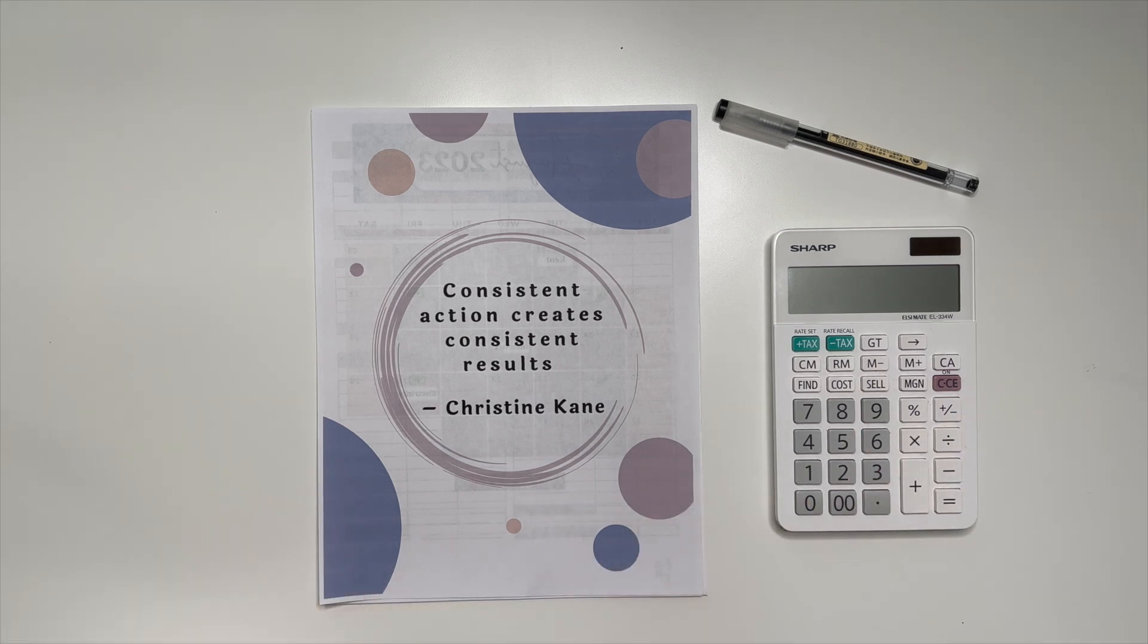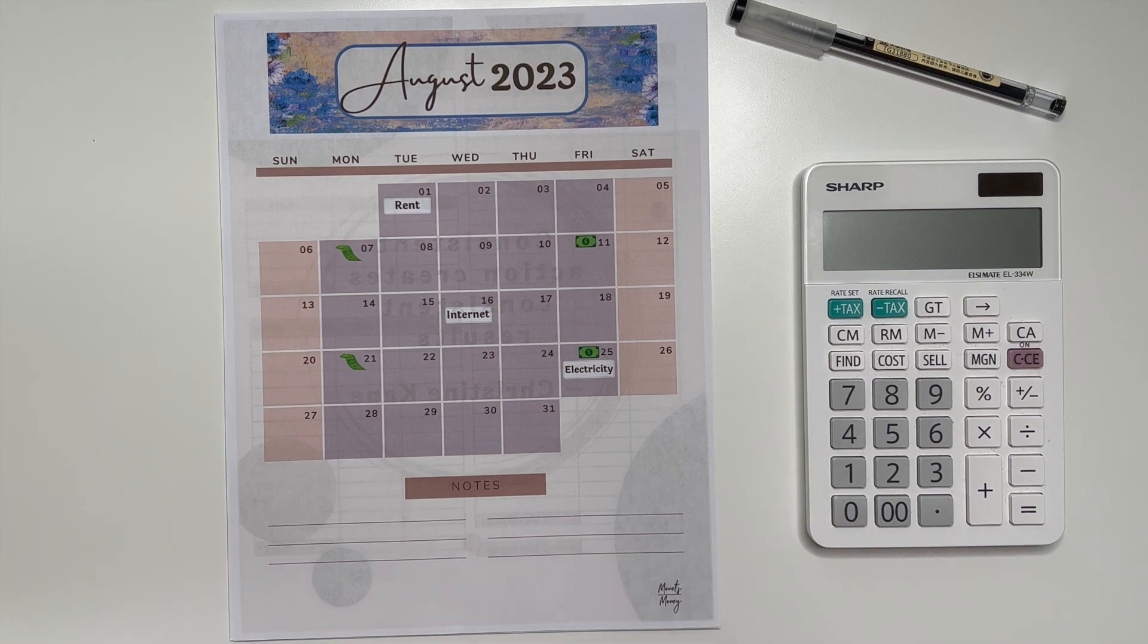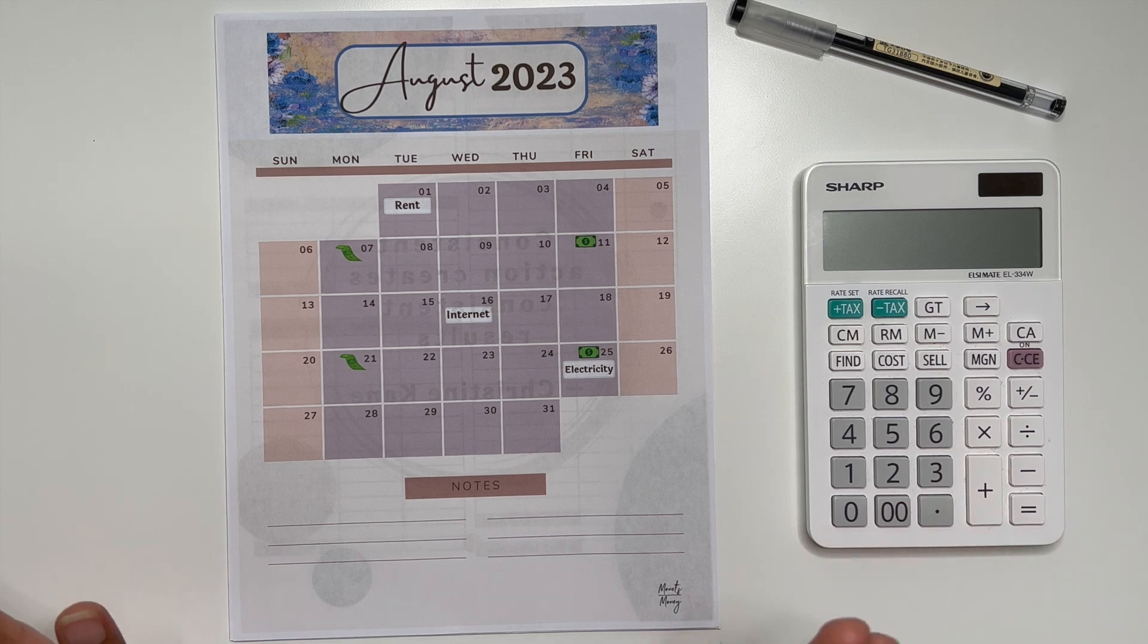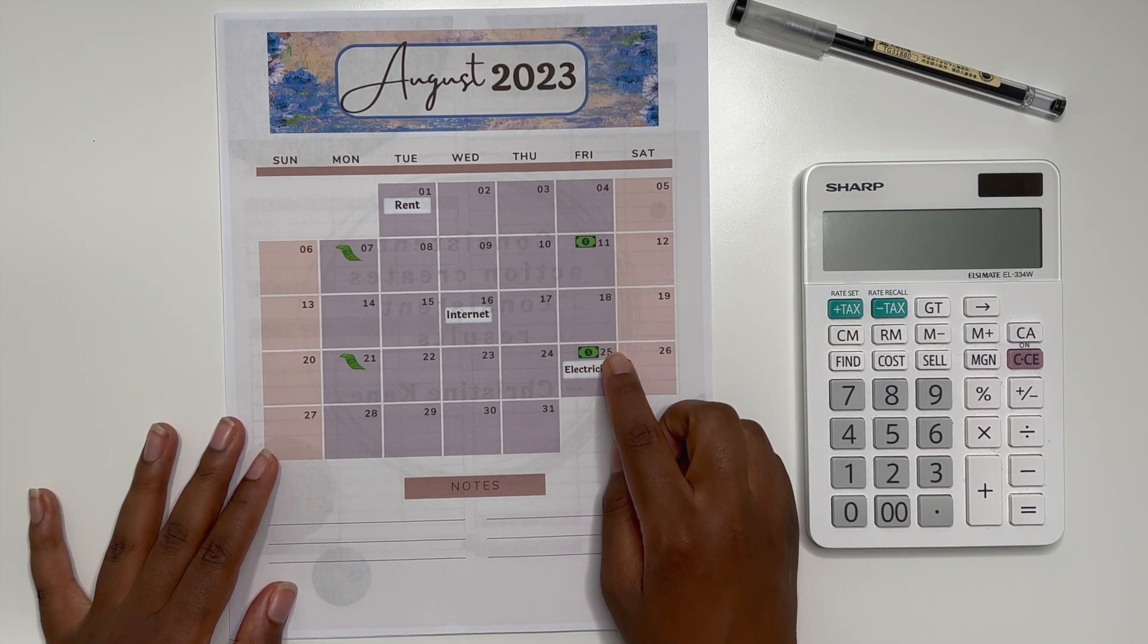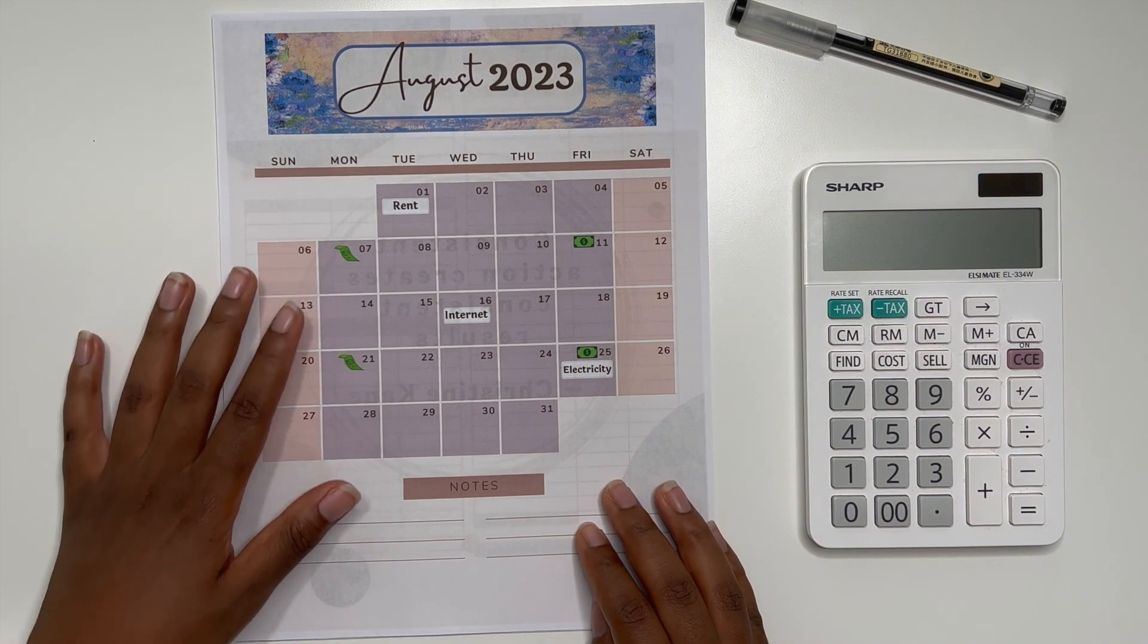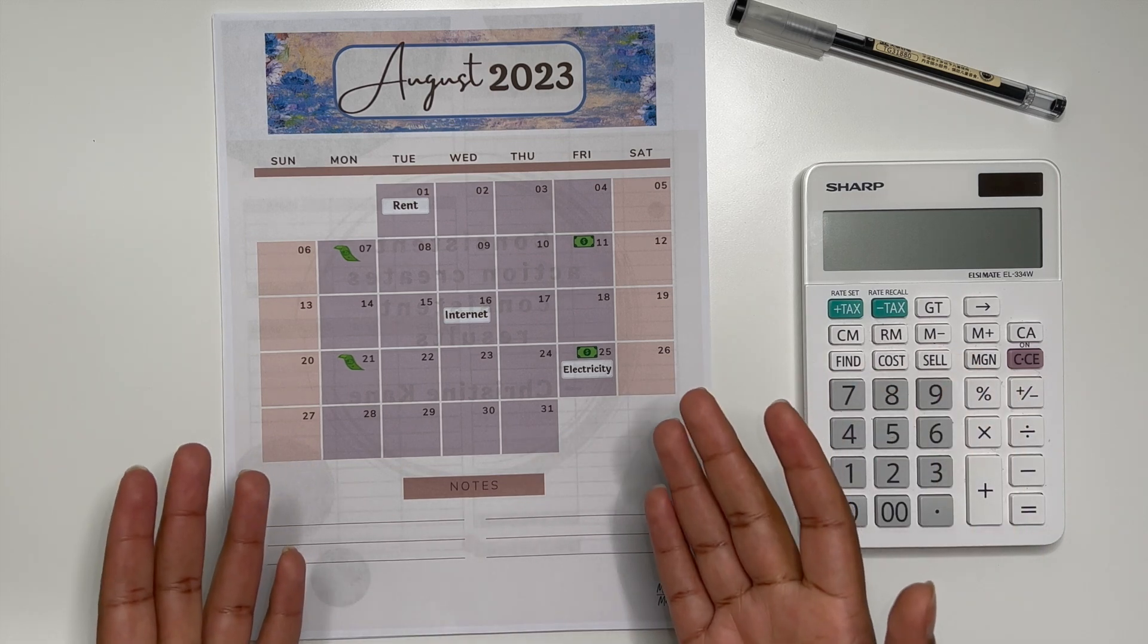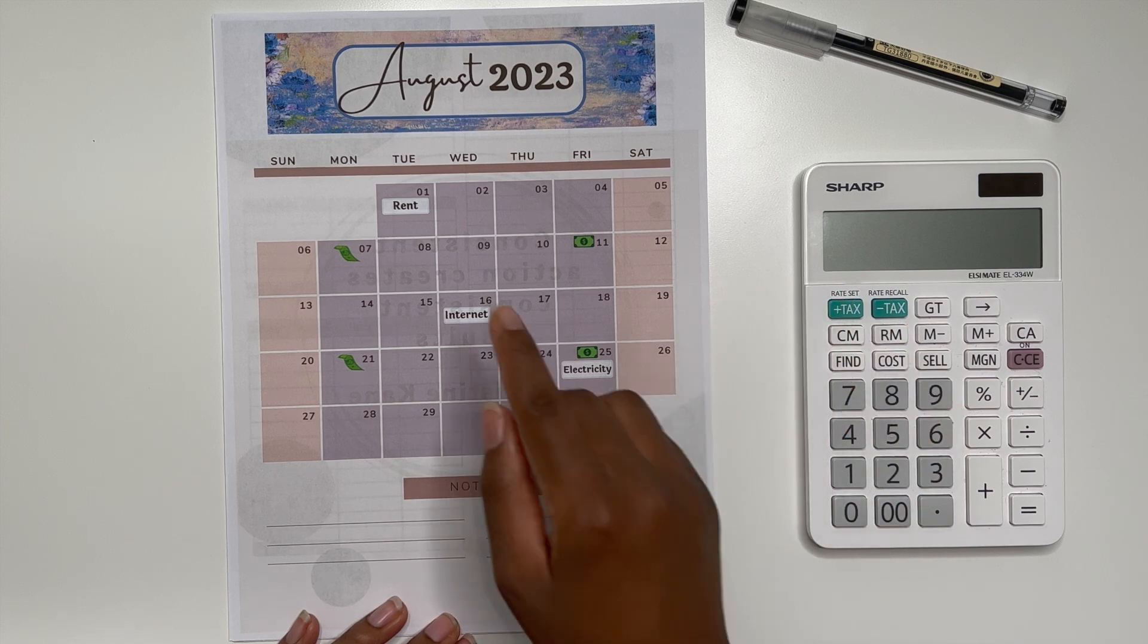So if we open up the sheet we can first look at my calendar view. So here is a calendar view that I also have available. I just like to look at it and have a quick glance of everything that's going on for the month. So these little dollar bills notate when I get paid from my full-time job and then these dollar bills just notate when I pay myself from any side income that I earn. And then here I also have the dates for the expenses that I have to pay.